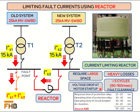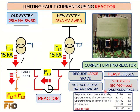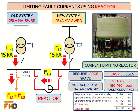Since current limiting reactors reduce the value of short circuit current but have no effect in reducing the fault clearance time, as per standard, fault clearance will take 90 to 160 milliseconds depending on the response and operation time of the protection relay, operation time of the circuit breaker, and the arc duration. By using current limiting reactors, there will not be any improvement in fault clearance time.